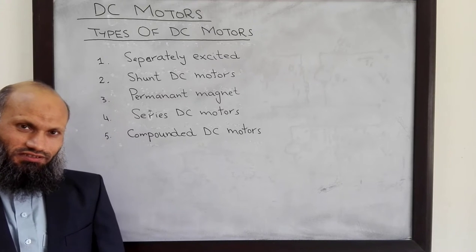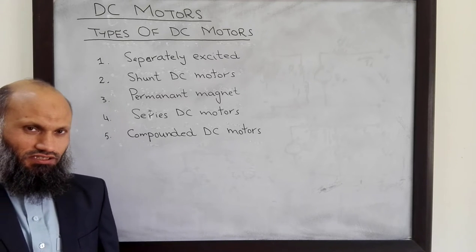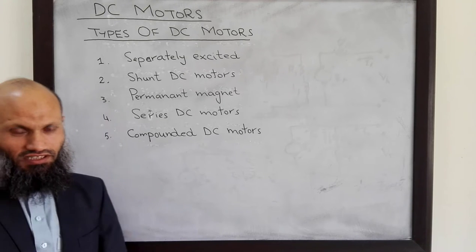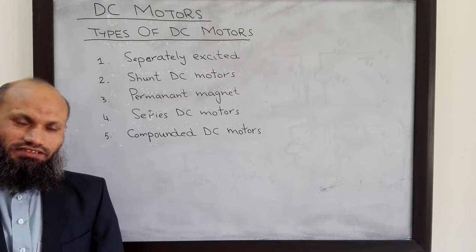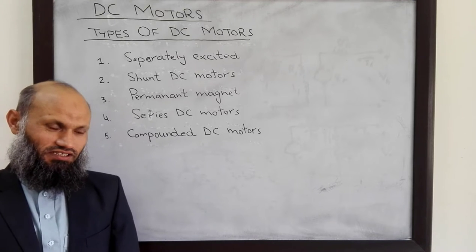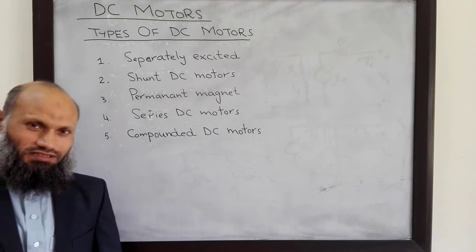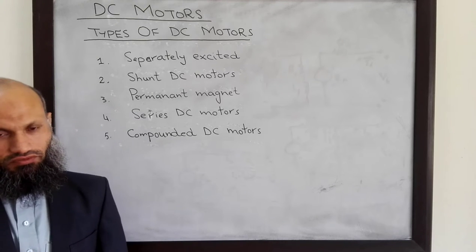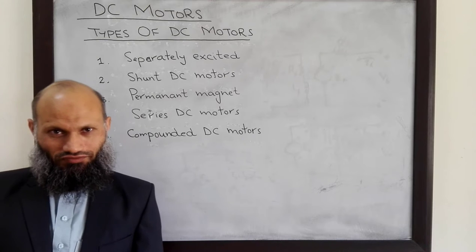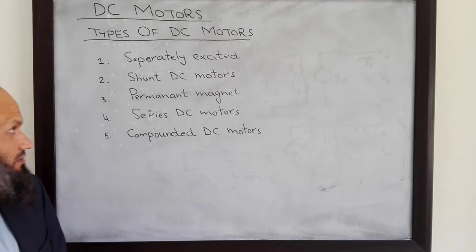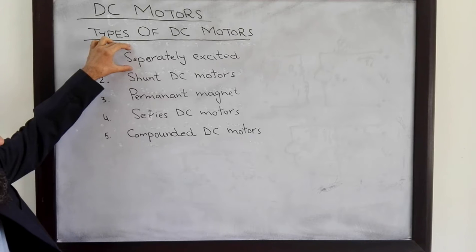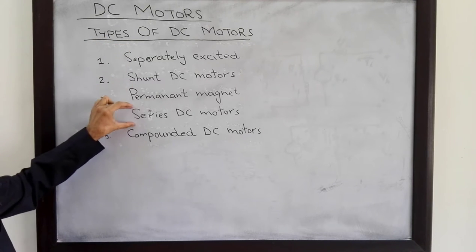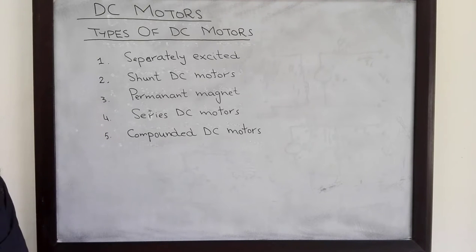In DC motors, there is a field circuit and field windings which generate the main magnetic field, and there are armature windings. Depending upon the electrical connections of field windings and armature windings, DC motors can be classified into different types: separately excited DC motors, shunt DC motors, permanent magnet DC motors, series DC motors, and compounded DC motors.